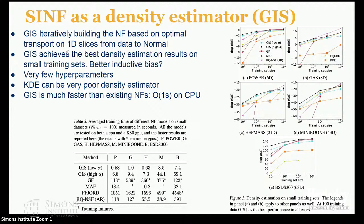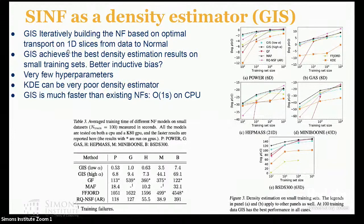One application is anomaly detection. We participated in a challenge at the LHC in physics — not my field since I'm a cosmologist — but we played this game. There was a challenge where they injected some events and participants tried to find a particle resonance. Our density estimation method was by far the best on this task, even compared to sophisticated machine learning practitioners in that community. These density estimators are very good for anomaly detection.